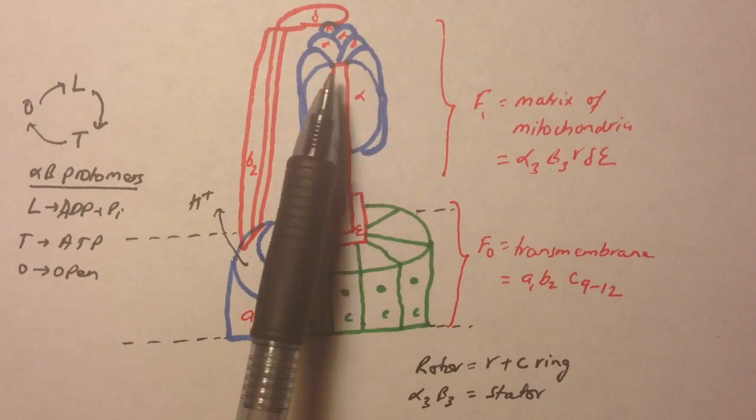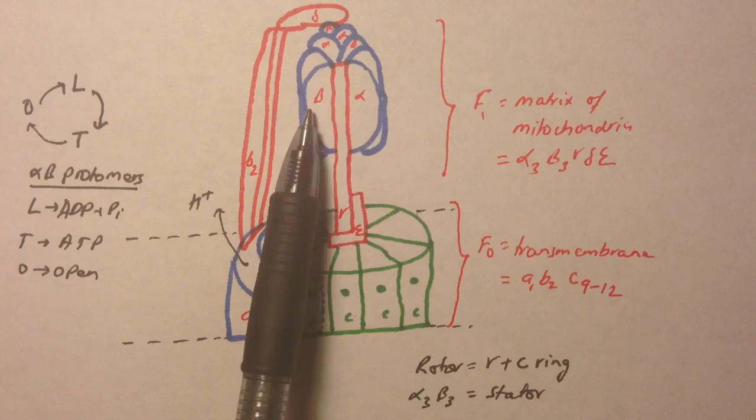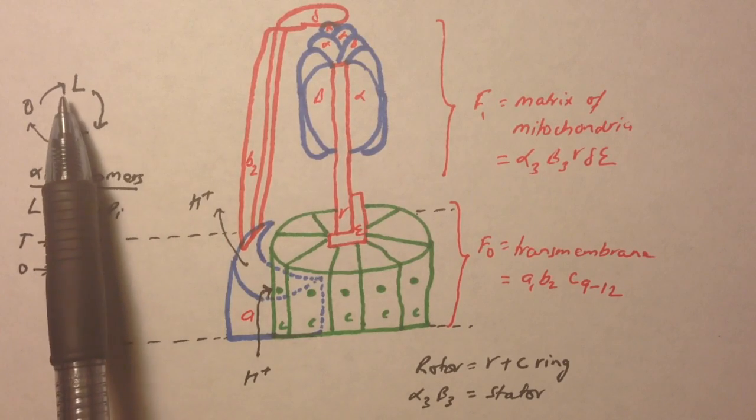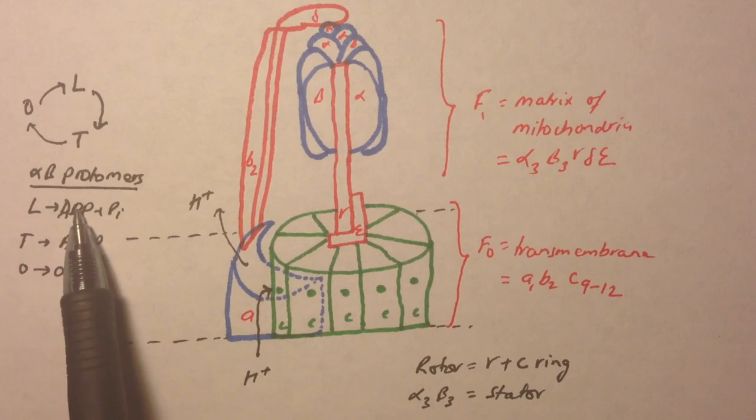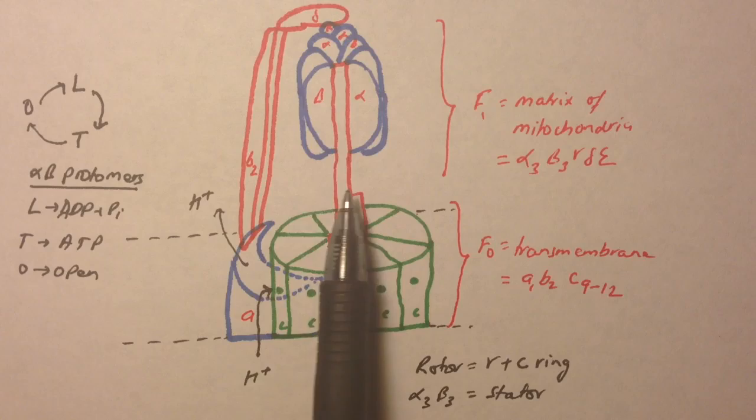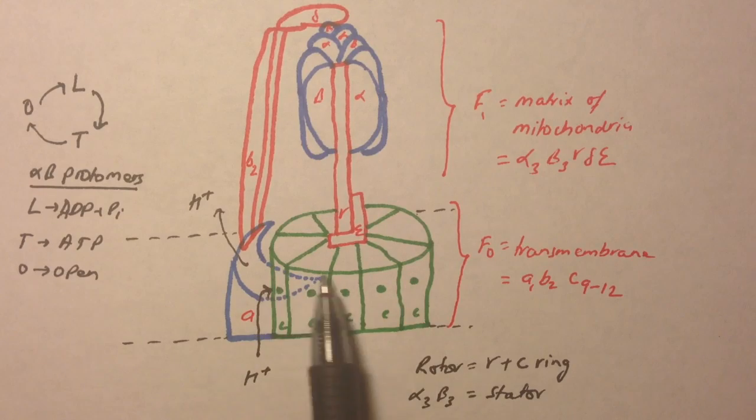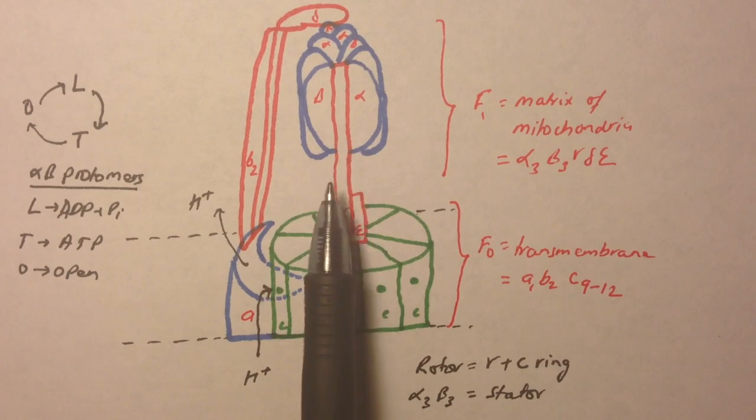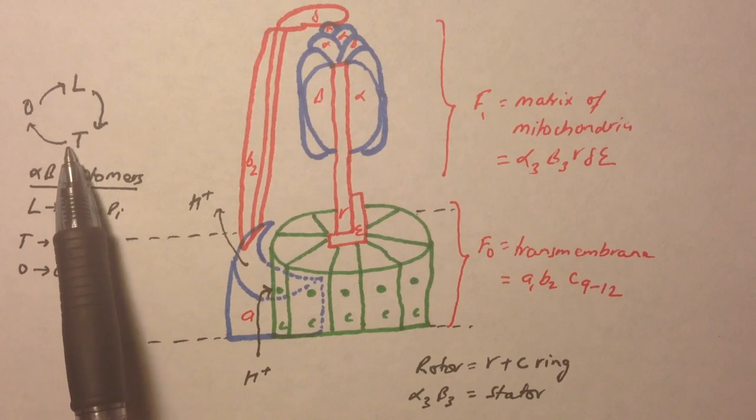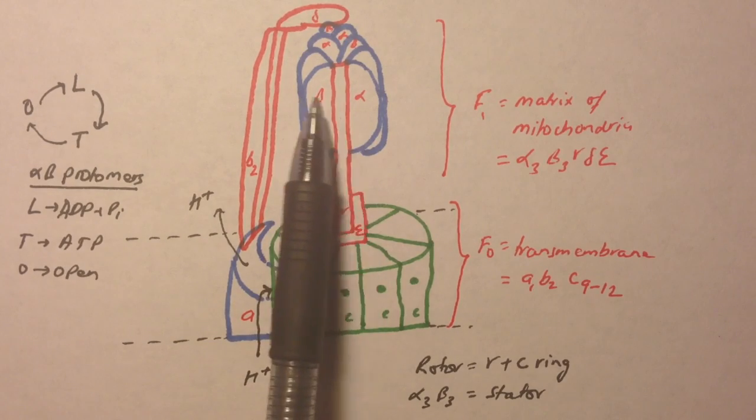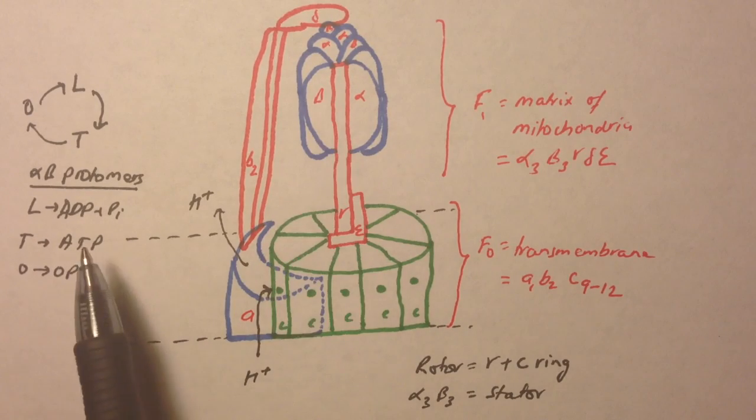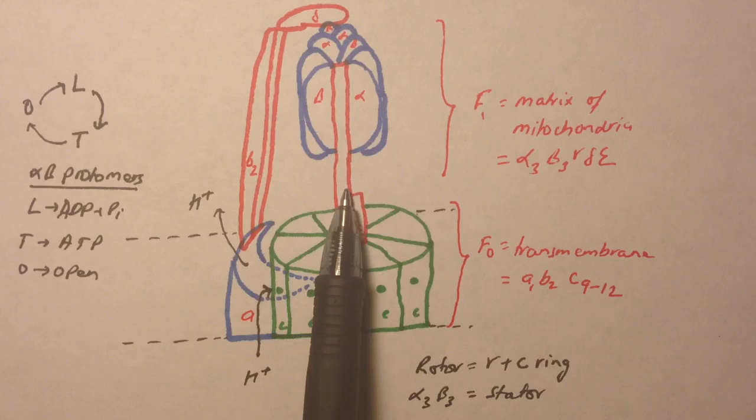So let's talk about it. Let's say this protomer right here in the front, alpha-beta, was initially in L state. When it's in L state, it binds to ADP and Pi. When this gamma subunit rotates - this gamma subunit rotates when this C-ring rotates - so when this gamma subunit rotates, if this is in L, that's going to convert into T, this alpha-beta protomer. And when it converts from L to T, then the ADP and Pi bound to it converts into ATP, and when it rotates again...